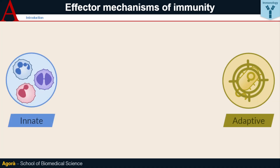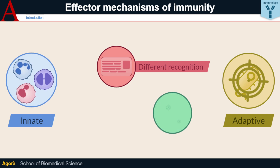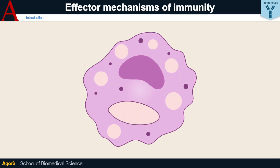The mechanisms of pathogen recognition of innate and adaptive immunity have significant differences. In contrast, the responses that cells of innate and adaptive immunity enact to eliminate pathogens are strongly intertwined and actually influence and support each other.